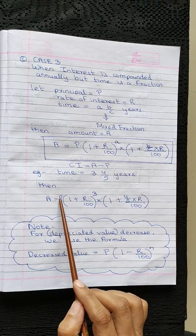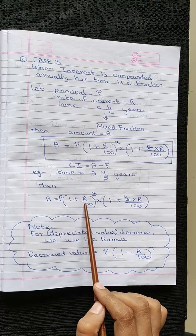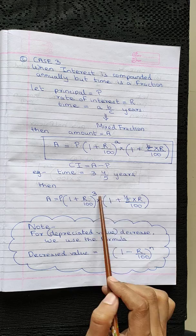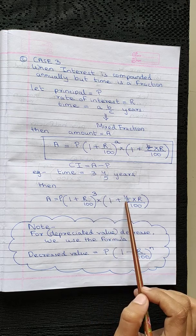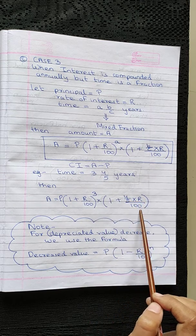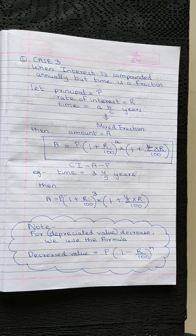So the formula becomes: A is equal to P into 1 plus R upon 100, raised to the power 3, into 1 plus 4 upon 5 into R upon 100, where R and P are the rate of interest and the principle P.